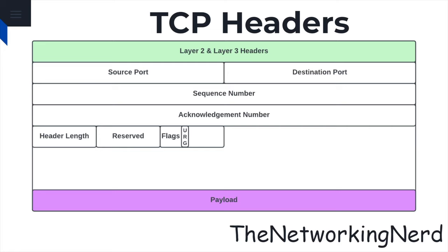The urgent flag points to urgent data within the TCP segment that requires immediate attention from the receiving application, and it allows for the transmission of time-sensitive or high-priority data. The acknowledgement flag acknowledges the receipt of data from the other party, and it confirms the successful delivery of previously received packets and helps ensure reliable data transmission by acknowledging the sequence number of the next expected byte.